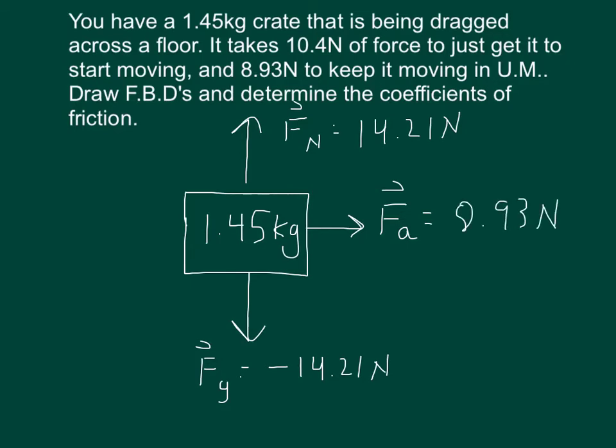Now if it's moving in uniform motion, we know that the forces must be balanced. So the force in the opposite direction is our kinetic friction and it will also be 8.93 and we'll call it negative because it's in the opposite direction.